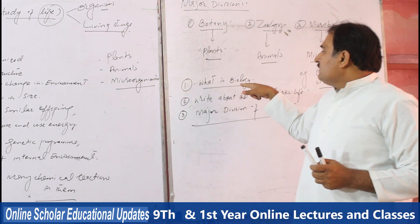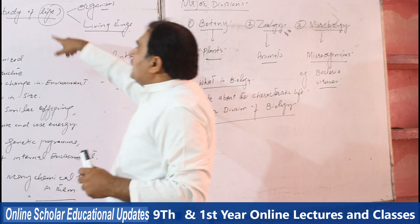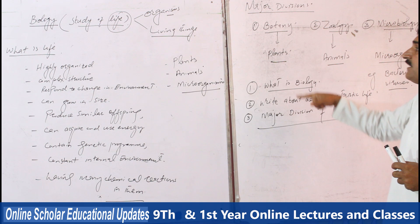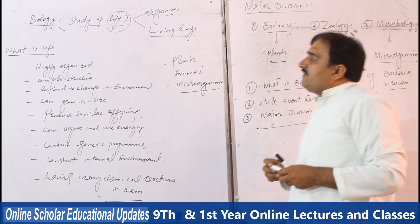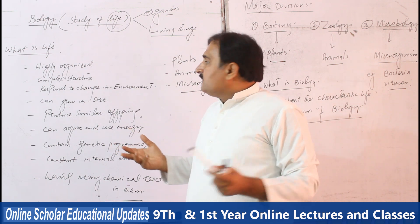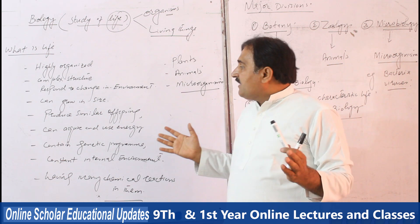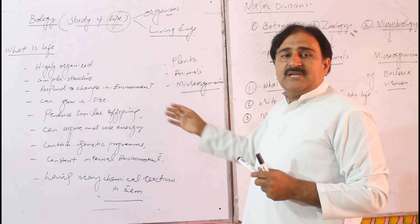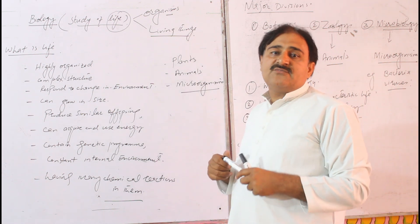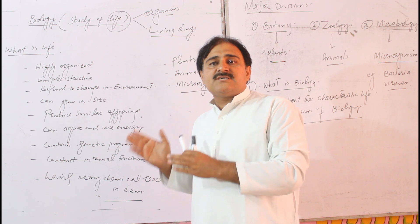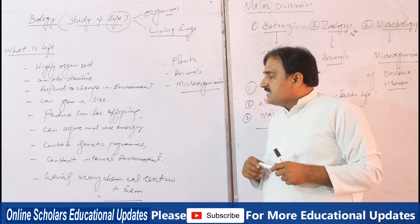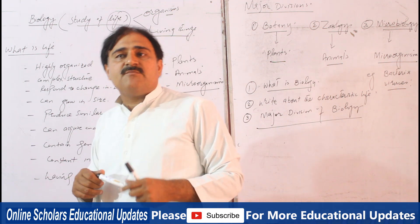What is biology? Biology is the study of life, the study of organisms, the study of living things. The characteristics of life consist of the following points: living organisms are highly organized having complex structures, respond to change in environment, can grow in size, produce similar offspring, can acquire and use energy, contain genetic material in the form of DNA that can be transmitted from parents to offspring, maintain constant internal environmental conditions through homeostasis, and have many chemical reactions in the form of metabolic activities.